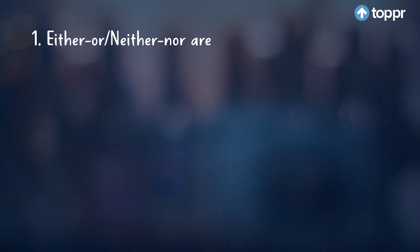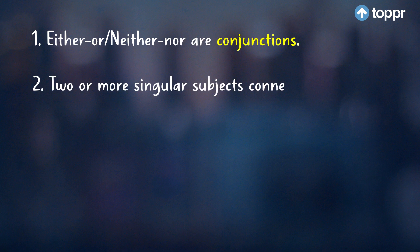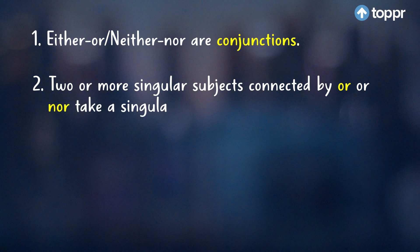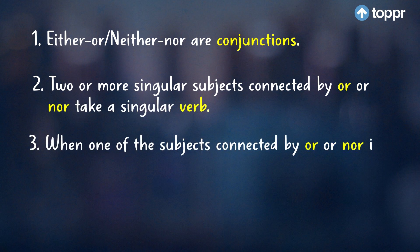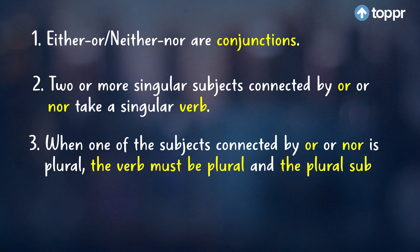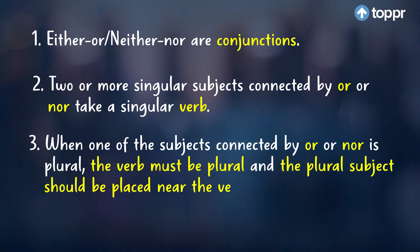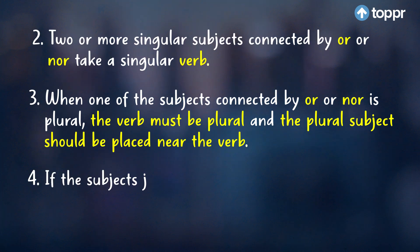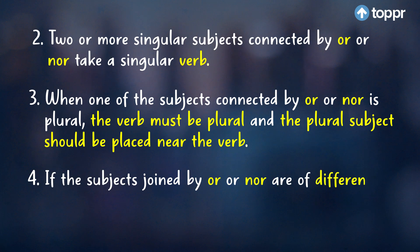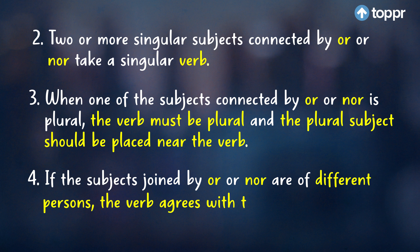Too much to take in. Let's summarize fast. Either, or and neither, nor are just conjunctions. Two or more singular subjects connected by 'or' or 'nor' take a singular verb. When one of the subjects connected by 'or' or 'nor' is plural, the verb must be plural, and the plural subject should be placed near the verb. If the subjects joined by 'or' or 'nor' are of different persons, the verb agrees with the subject sitting nearer.